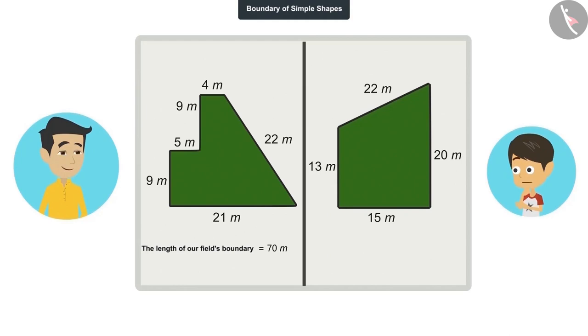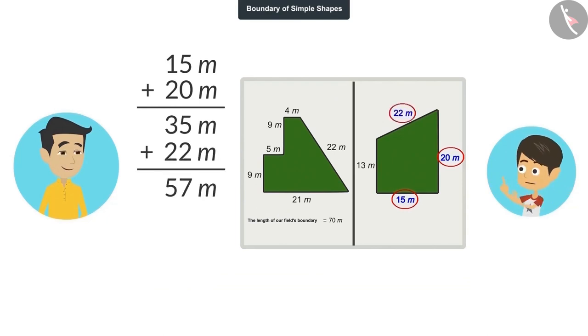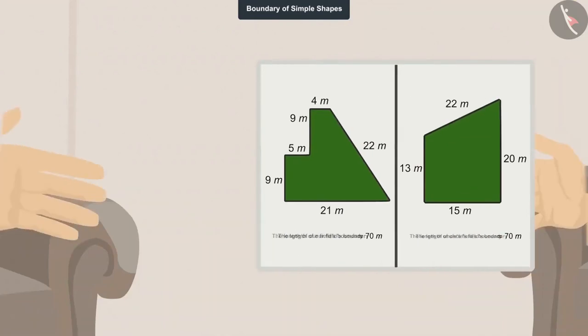It has only 4 edges. That means its boundary will be less than our field's boundary. 15 added to 20 is 35 meters. 22 meters added to 35 is 57 meters. And when 13 meters are added to 57 meters, the answer will be 70 meters. Papa, the length of uncle's farm's boundary is 70 meters. Show me. Here it is.